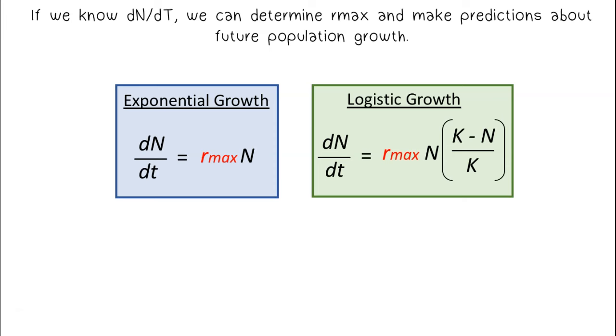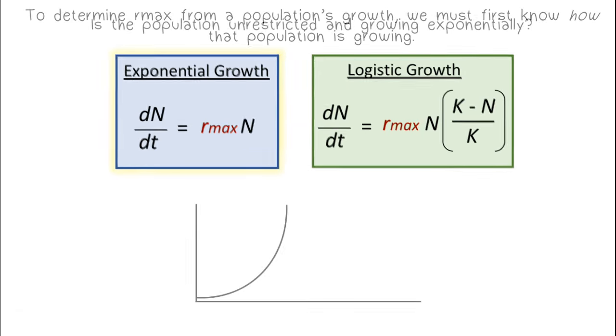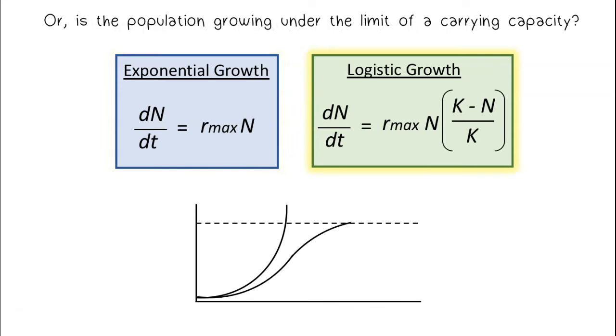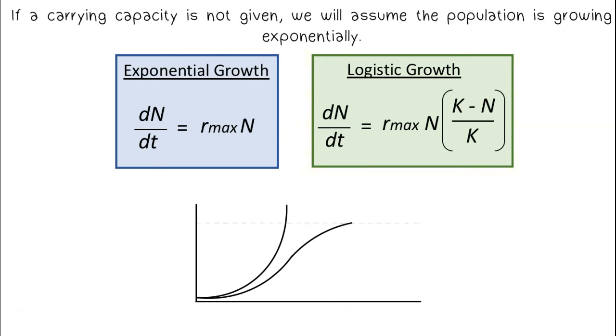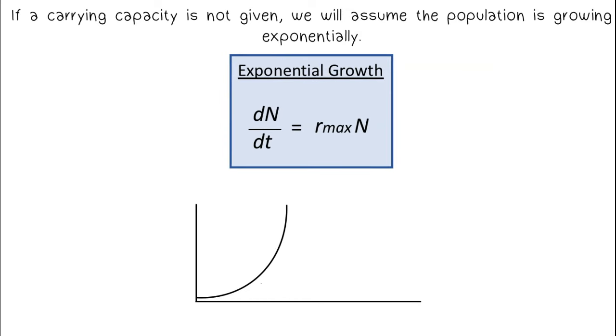If we know dN over dt, we can determine rmax and make predictions about future population growth. To determine rmax from a population's growth, we must first know how that population is growing. Is the population unrestricted and growing exponentially? Or is the population growing under the limit of a carrying capacity? If a carrying capacity is not given, we will assume the population is growing exponentially.